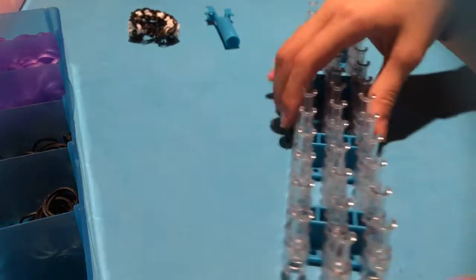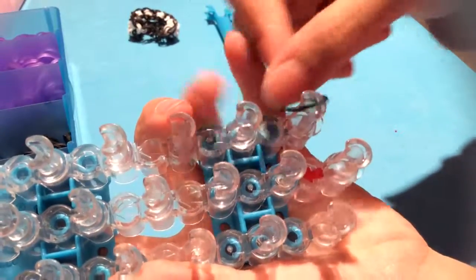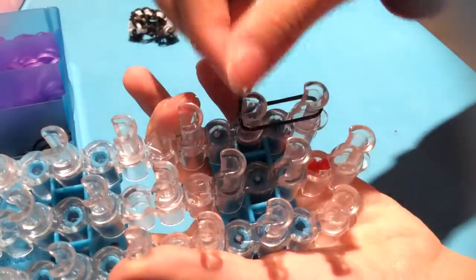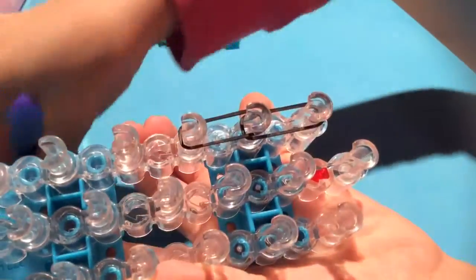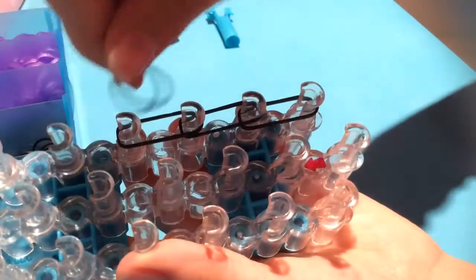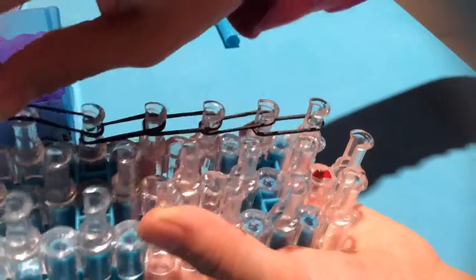Okay, so right after that I just pull it off. It should look like this. Now we make the extension. Turn your loom around, take the color of your sides or any color you prefer, and then put them like this.